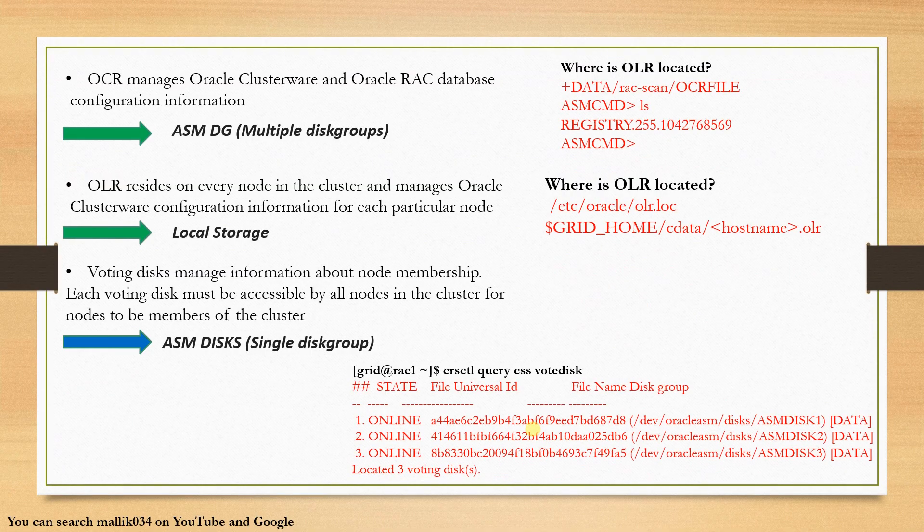OCR is like a central repository. It contains entire information about my cluster. For example, if I have a three, four, or five node cluster, all the cluster node resources — VIPs, disk groups, ASM listeners, everything — entire information will be in my OCR configuration file. That is called the central inventory. OCR will be in my ASM disk group, and I can have it in multiple ASM disk groups.